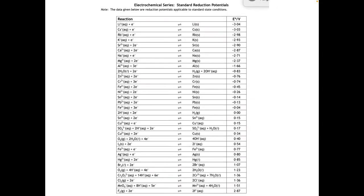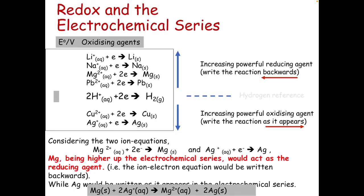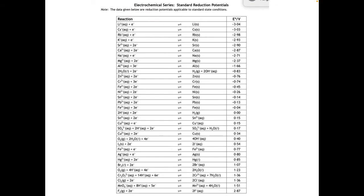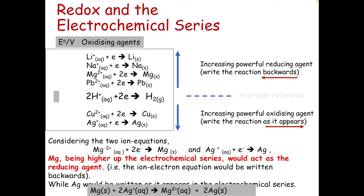If you go to your data booklet, these are all reduction reactions — they're gaining electrons. The electrons always flow from the higher-up metal in the electrochemical series to one that's lower down. That means the higher-up metal loses electrons — it undergoes oxidation. The higher up you go in the electrochemical series, the more powerful the reducing agent, and we'd write that equation backwards because these are all reduction reactions.